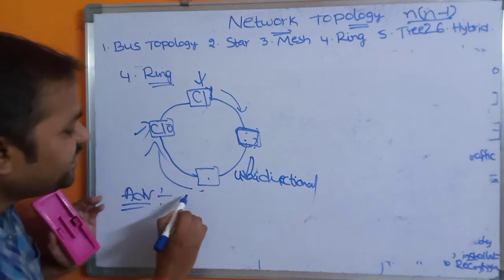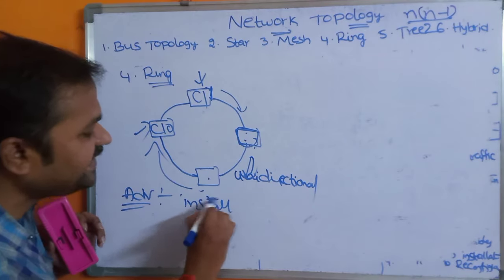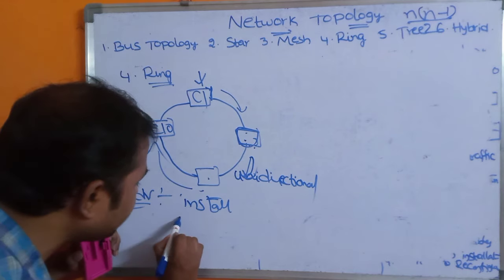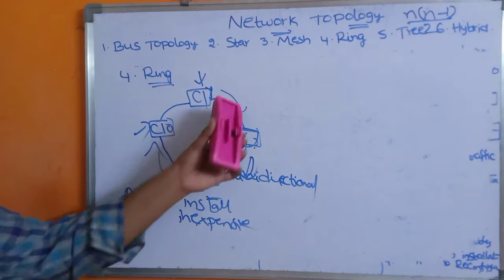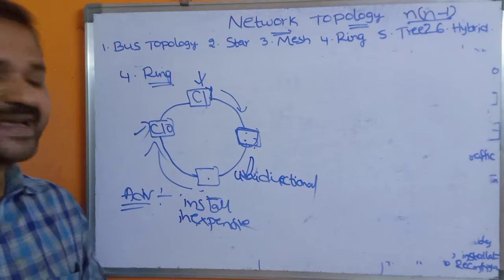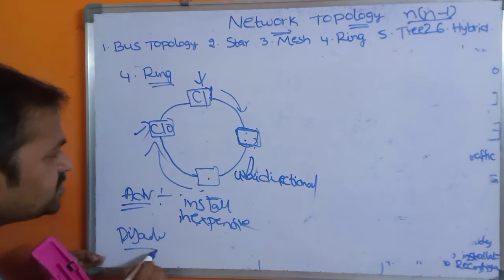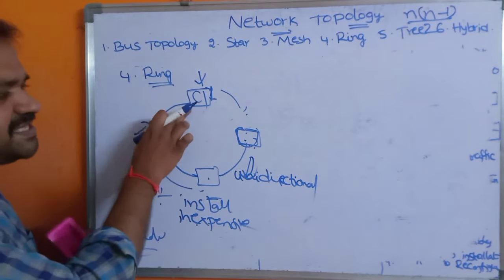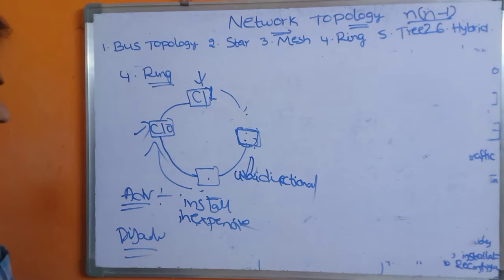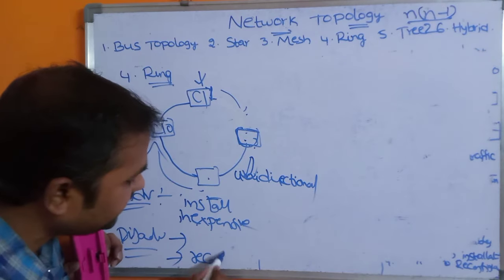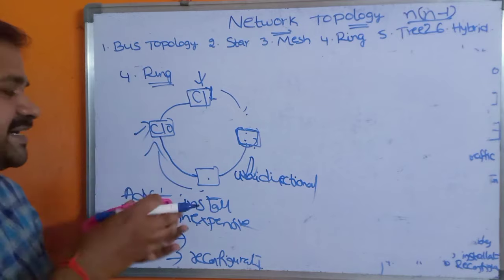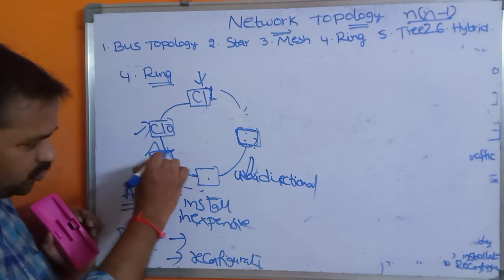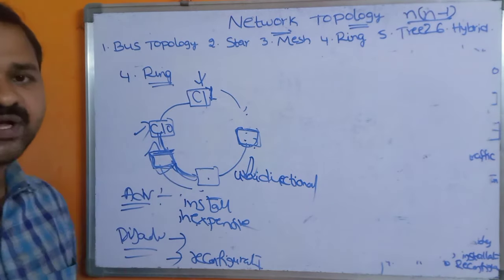Advantages of ring topology: it is easy to install using simple cables to establish the architecture, and it is inexpensive because fewer cables are needed compared to mesh topology. Disadvantages: if one link fails, the entire network fails. Reconfiguration is also very difficult — inserting a new computer requires removing two existing connections and creating two new ones.